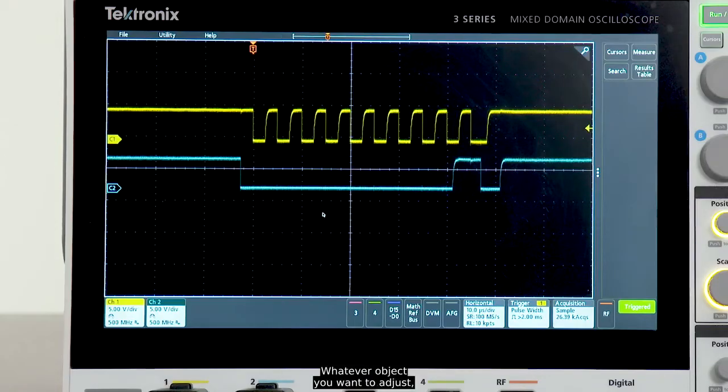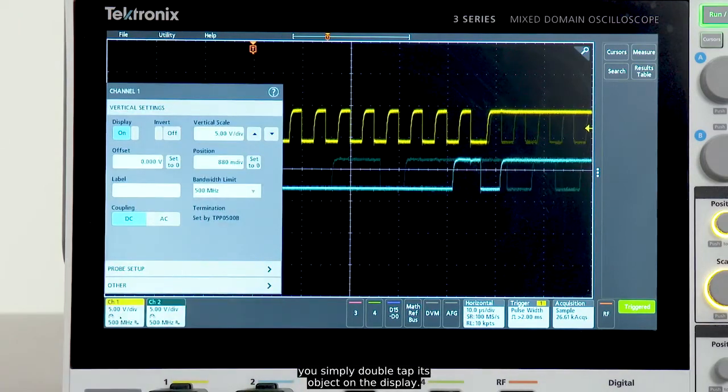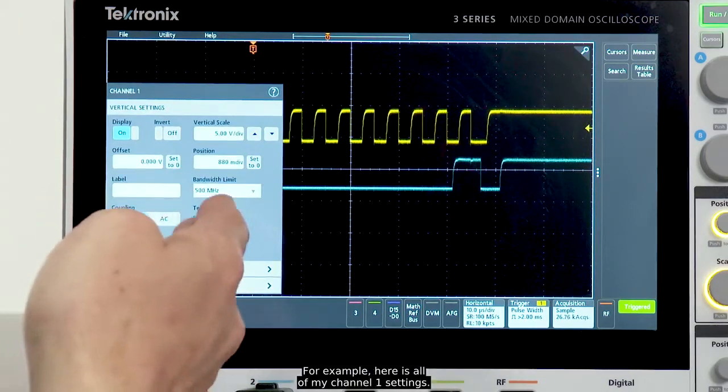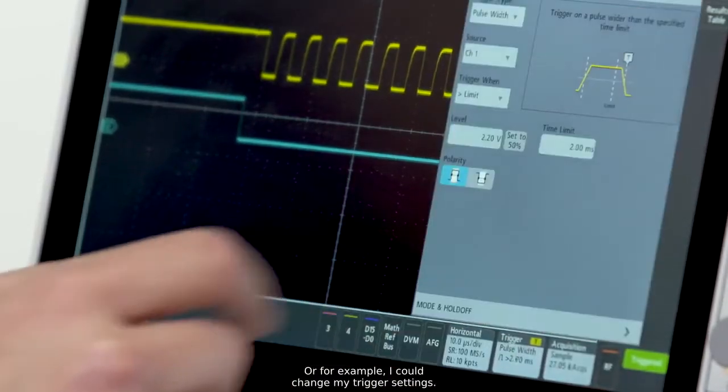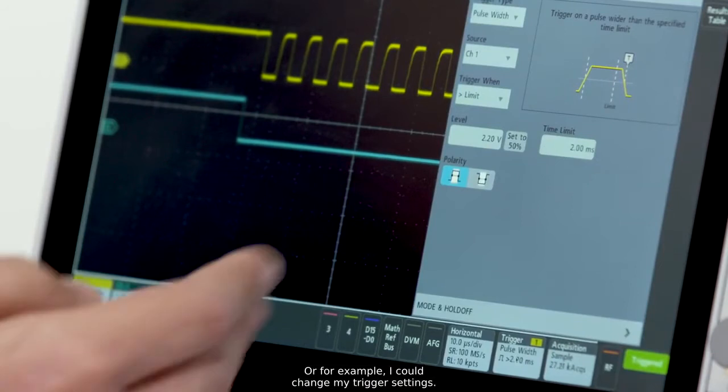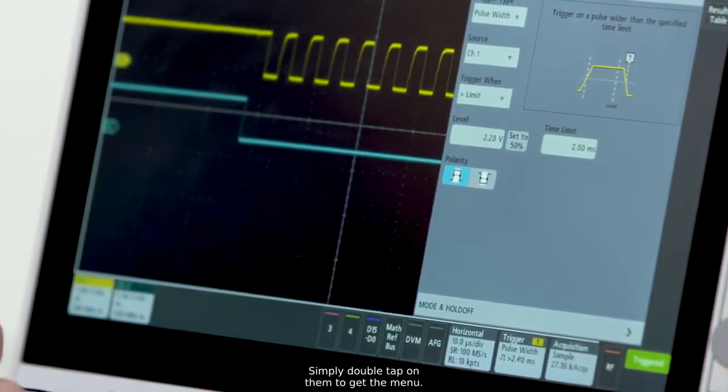Whatever object you want to adjust you simply double tap its object on the display. For example here is all of my channel 1 settings or for example I could change my trigger settings. Simply double tap on them to get the menu.